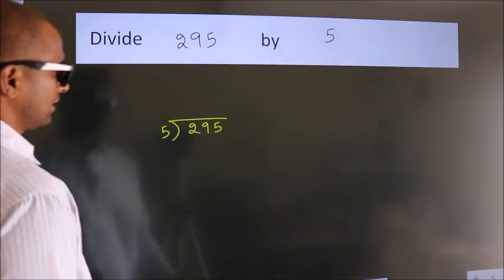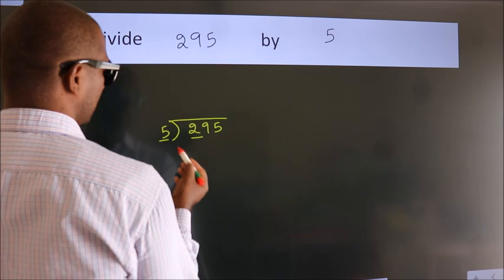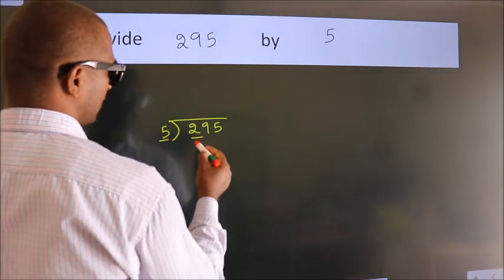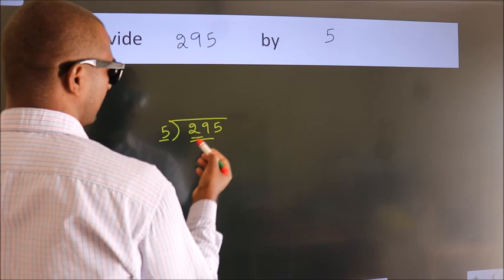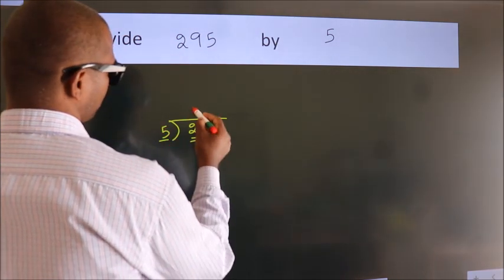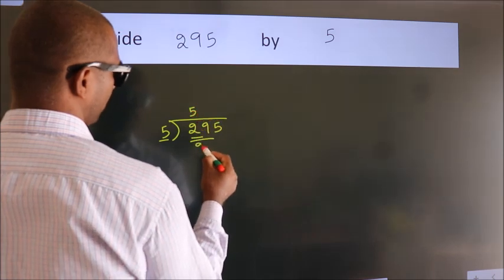Next. Here we have 2. Here 5. 2 is smaller than 5, so we should take 2 numbers. 29. A number close to 29 in the 5 table is 5 times 5 equals 25.